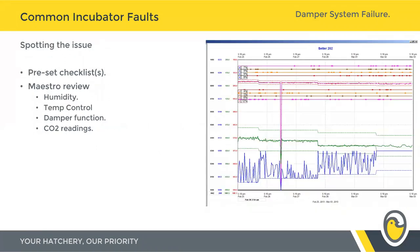Spotting the issue with the damper — again, it's vital that this is part of your preset checklist. Go into test mode, drive the damper all the way open, then all the way closed, and do a visual check to make sure all the dampers on your machine are doing the same thing. Then review your Maestro data. The one thing in the incubator that will quickly tell you if something's not right on the ventilation is the humidity level — it's the first and fastest to respond if something goes too high or too low on the HVAC.